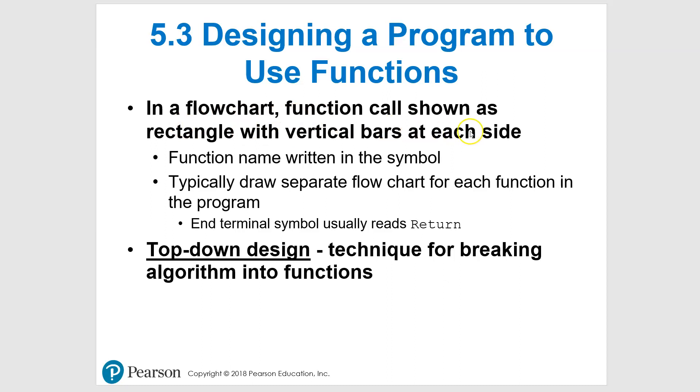The flowchart symbol that you're going to use is a rectangle with vertical bars on each side, and you'll see an example in just a second. You're going to write the function name in the symbol just like the other ones. Anytime you have another function, if you have one, two, three functions or whatever, you'll have your own flowchart for each one of those functions.